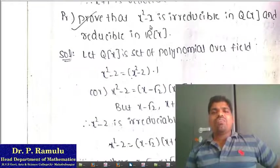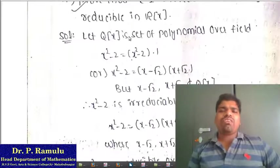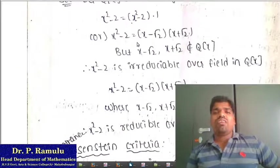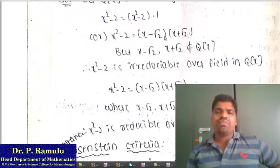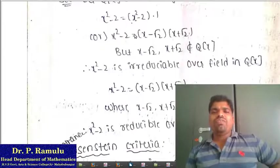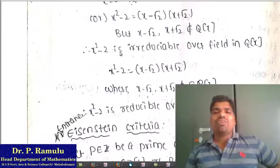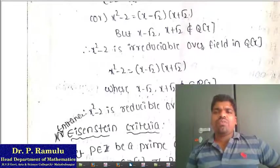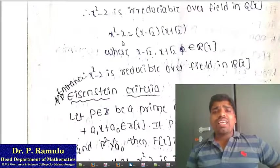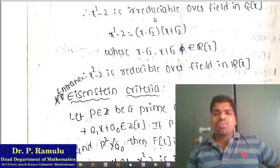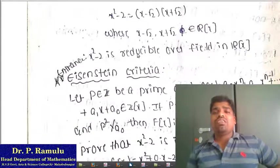Prove that x² − 2 is irreducible in Q[x] and reducible in R[x]. For Q[x], x² − 2 can be written as (x − √2)(x + √2). But this product does not belong to Q[x], therefore x² − 2 is irreducible over Q. For R[x], x² − 2 = (x − √2)(x + √2), where √2 belongs to R, so x − √2 and x + √2 belong to R[x], meaning the polynomial is reducible over R[x].